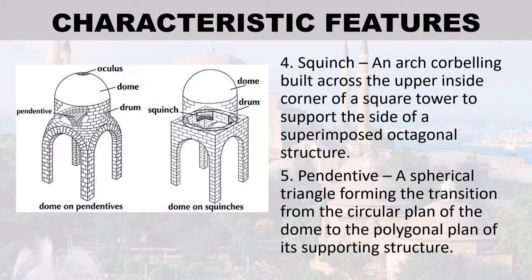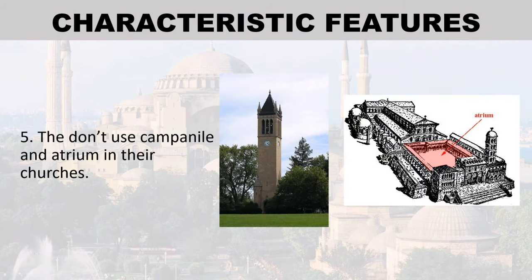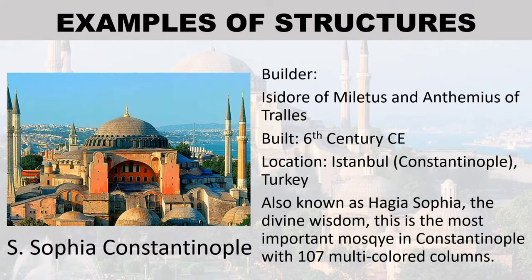Five — the pendentive, a spherical triangle forming the transition from the circular plan of the dome to the polygonal plan of its supporting structure. The fourth characteristic feature is the extensive use of mosaic decoration. Fifth, Byzantine churches do not use campanile and atrium.